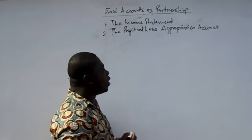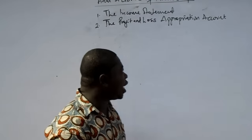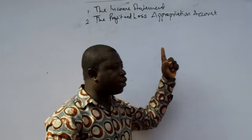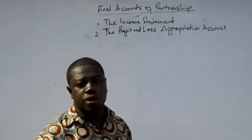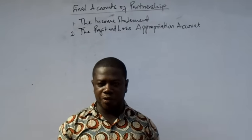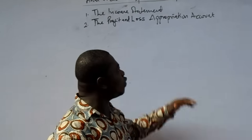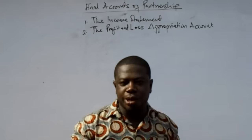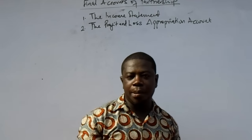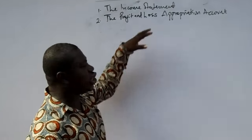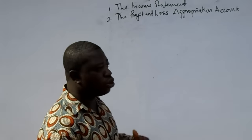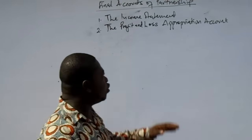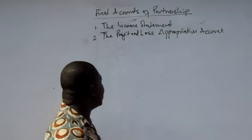We are going to prepare the profit and loss appropriation account. The purpose of the profit and loss appropriation account is to share the profits. After we have gotten the profit, this account is going to be used to share the profit among the partners. Before we share the profit, there are one or two things we may do in order to arrive at the residual profit.